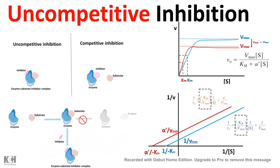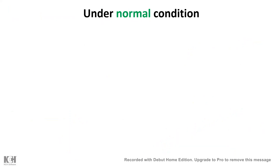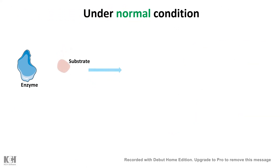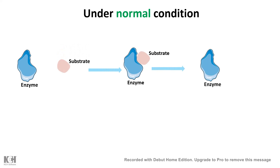Today we'll talk about uncompetitive inhibition. It's an important type of reversible inhibition. In normal circumstances, the enzyme interacts with the substrate and forms a transient enzyme-substrate complex, which ultimately gives rise to the product, and the enzyme is unaltered.